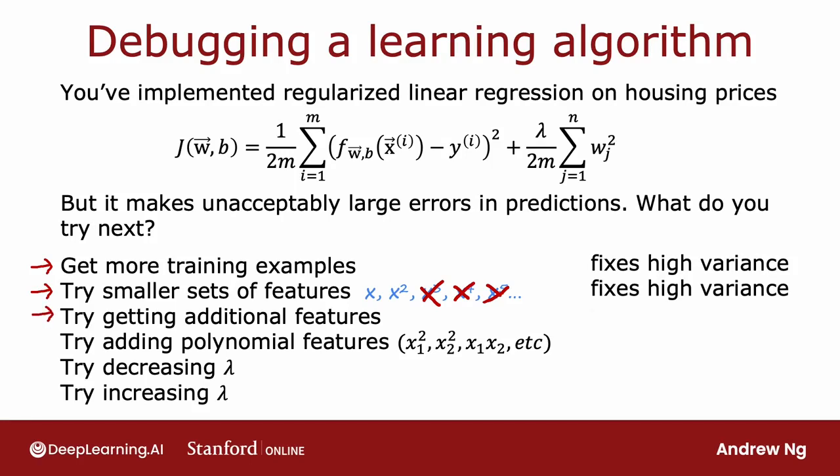Conversely, getting additional features, that's just adding additional features, is kind of the opposite of going to a smaller set of features. This will help you to fix a high bias problem. As a concrete example, if you were trying to predict the price of a house just based on the size, but it turns out that the price of a house also really depends on the number of bedrooms,